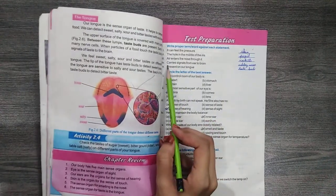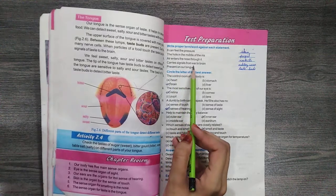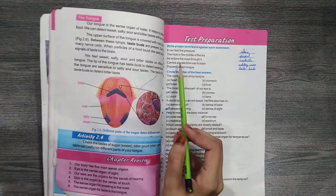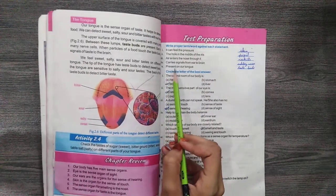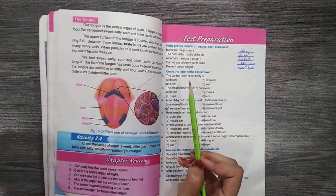Question number 4: Carries signals from ear to brain - the answer is auditory nerves. Question number 5: Present on tongue - the answer is taste buds.